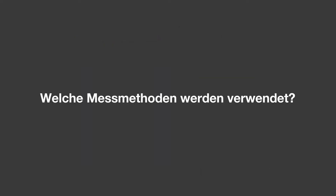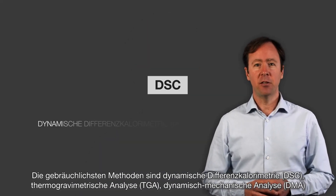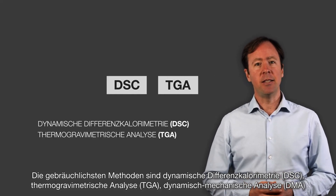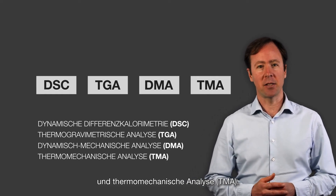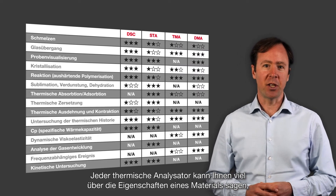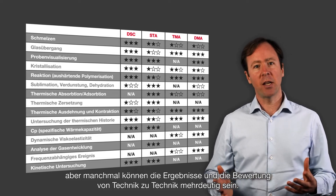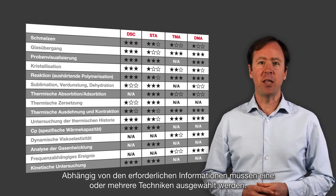What kind of measuring methods are used? There are different measuring methods available and the right method depends on which thermal properties are being analyzed. The most common methods are DSC differential scanning calorimetry, TGA thermal gravimetric analysis, DMA dynamic mechanical analysis and TMA thermal mechanical analysis. Each thermal analyzer can tell you a great deal about your material's properties, but sometimes the result and evaluation can be ambiguous from one technique to the other. Depending on the information required, one or multiple techniques will need to be selected.